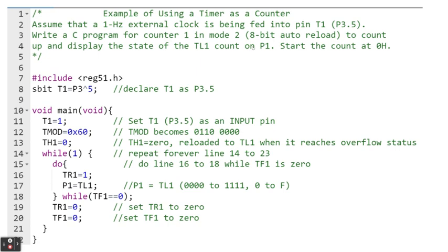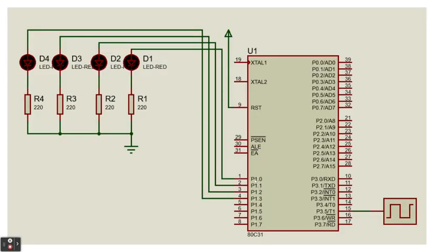This is just to satisfy the requirement that we are supposed to write a program for Counter 1 Mode 2 to count up and display the state of TL1 count on P1. We all know that P1 has 8 bits and TL1 only has 4 bits. Therefore, although we will be displaying the value of TL1 on P1, which is 8 bits, TL1 can only show up to 4. Therefore, not all of the 8 pins of P1 will be used. We only need 4 bits of P1 to display the values of TL1. That's why in our circuit here, we only need the P1.0, P1.1, P1.2, and P1.3. The reason is that the TL1 only has 4 bits or 4 numbers.